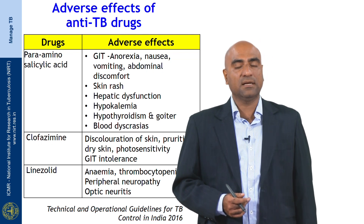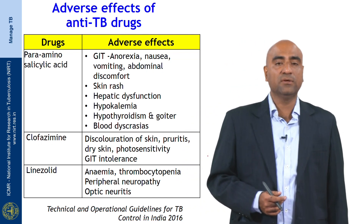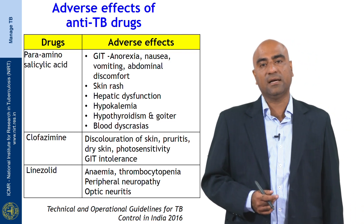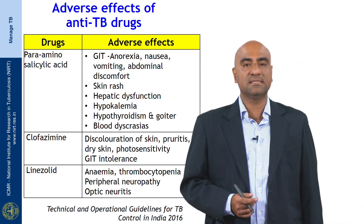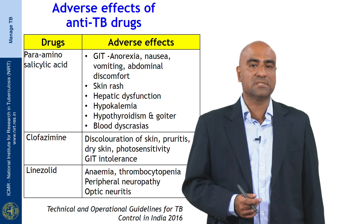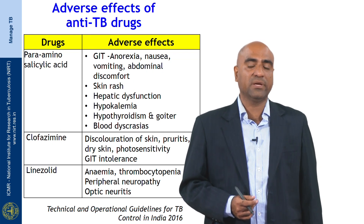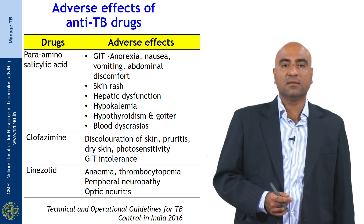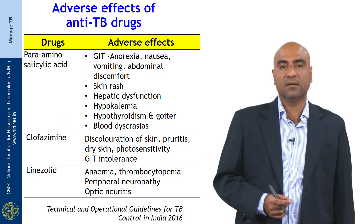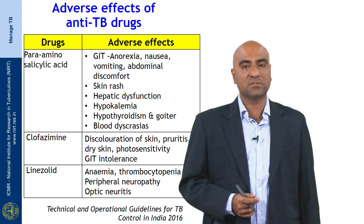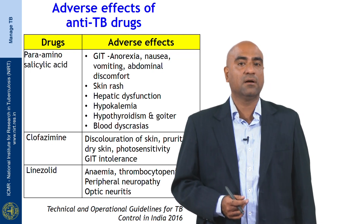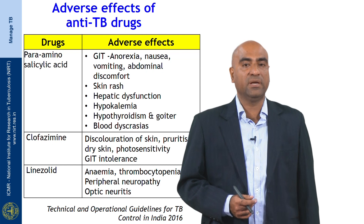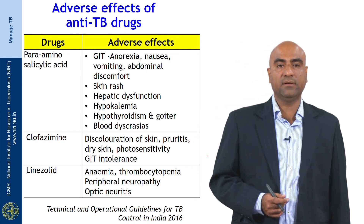The next drug is clofazimine. It has a unique adverse effect in the form of discoloration of the skin, pruritus, dry skin, and photosensitivity — these are very peculiar manifestations of clofazimine. The next drug is linezolid, which is mainly associated with anemia, thrombocytopenia, peripheral neuropathy, and optic neuritis.